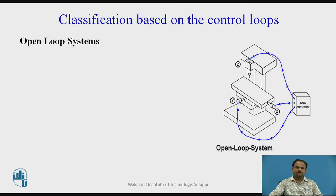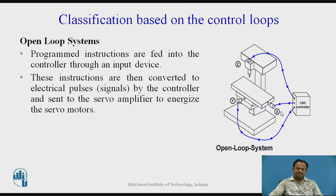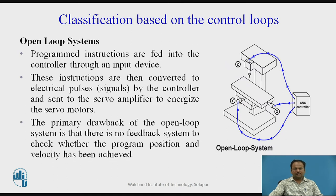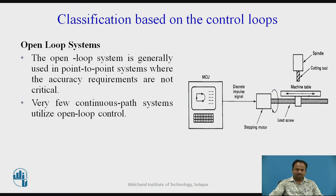Next is classification based on the control loops. Open loop system: programmed instructions are fed into the controller through the input device. These instructions are then converted to electrical pulse signals by the controller and sent to the servo amplifier to energize the servo motor. The primary drawback of the open loop system is that there is no feedback system to check whether the programmed position and velocity has been achieved. The open loop system is generally used in point to point systems where accuracy requirements are not critical. Very few continuous path systems utilize open loop control.